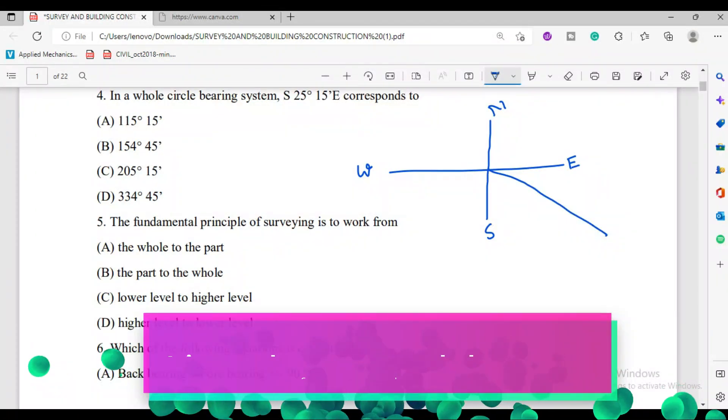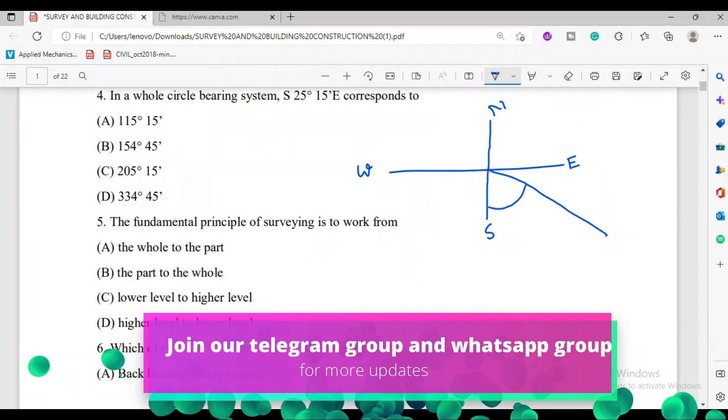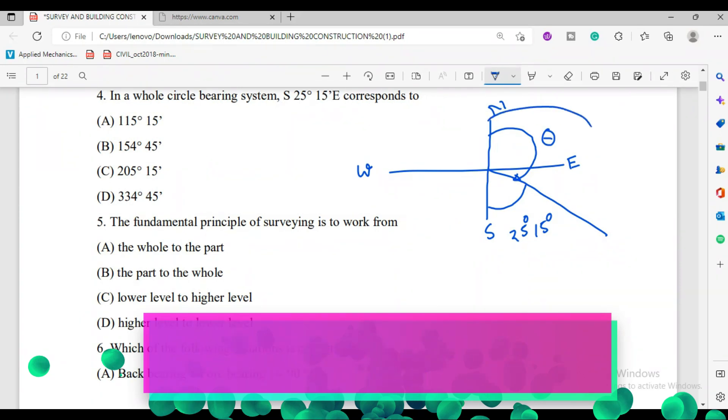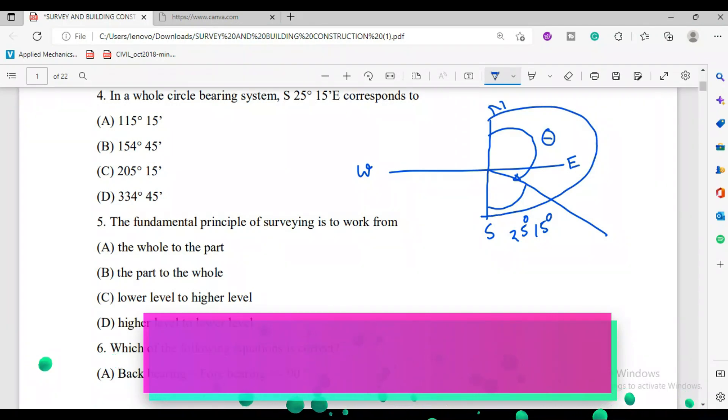The line is something like that, and this is 25 degree 15 minutes. That is in the quadrantal bearing system. Now you are going to talk about the whole circle bearing system. Obviously, the whole circle bearing system is north direction. This angle, suppose this angle is theta. Since north-south, the entire portion angle is 180 degrees, right, since it is a straight line.